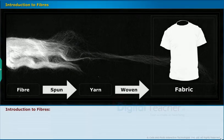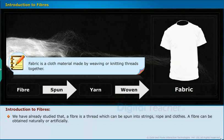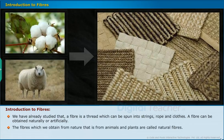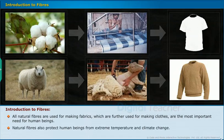We have already studied that a fiber is a thread which can be spun into strings, rope and cloths. A fiber can be obtained naturally or artificially. Note: Fabric is a cloth material made by weaving or knitting threads together. The fibers which we obtain from nature — from animals and plants — are called natural fibers. All natural fibers are used for making fabrics, which are further used to make clothes — the most important need for human beings.